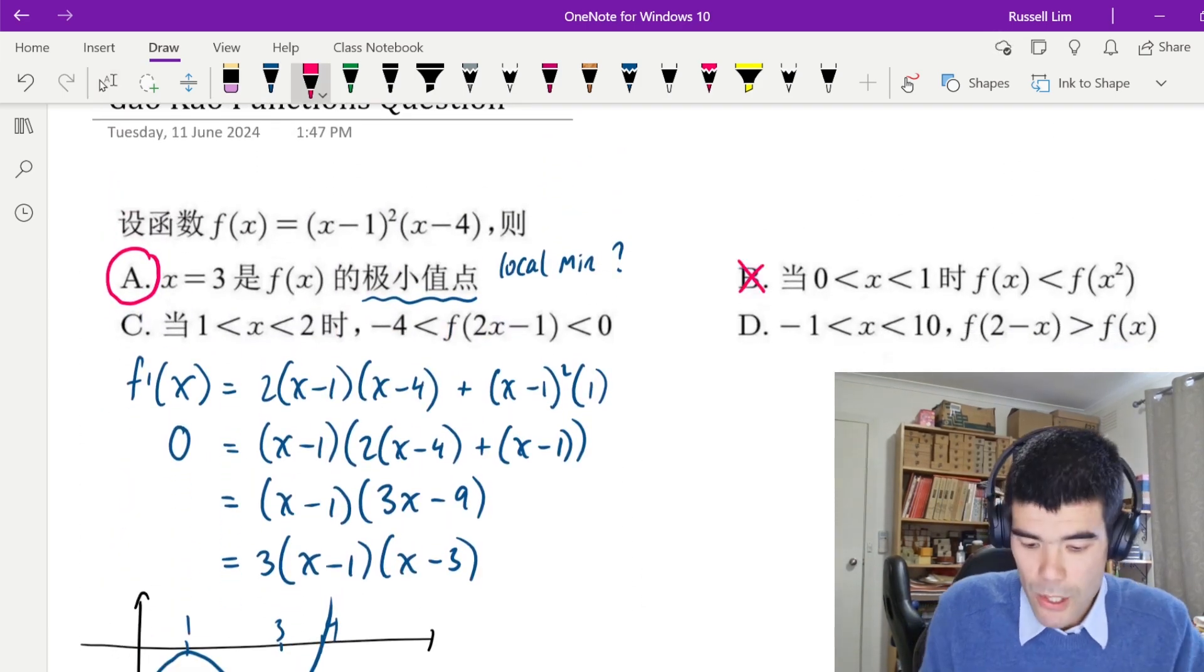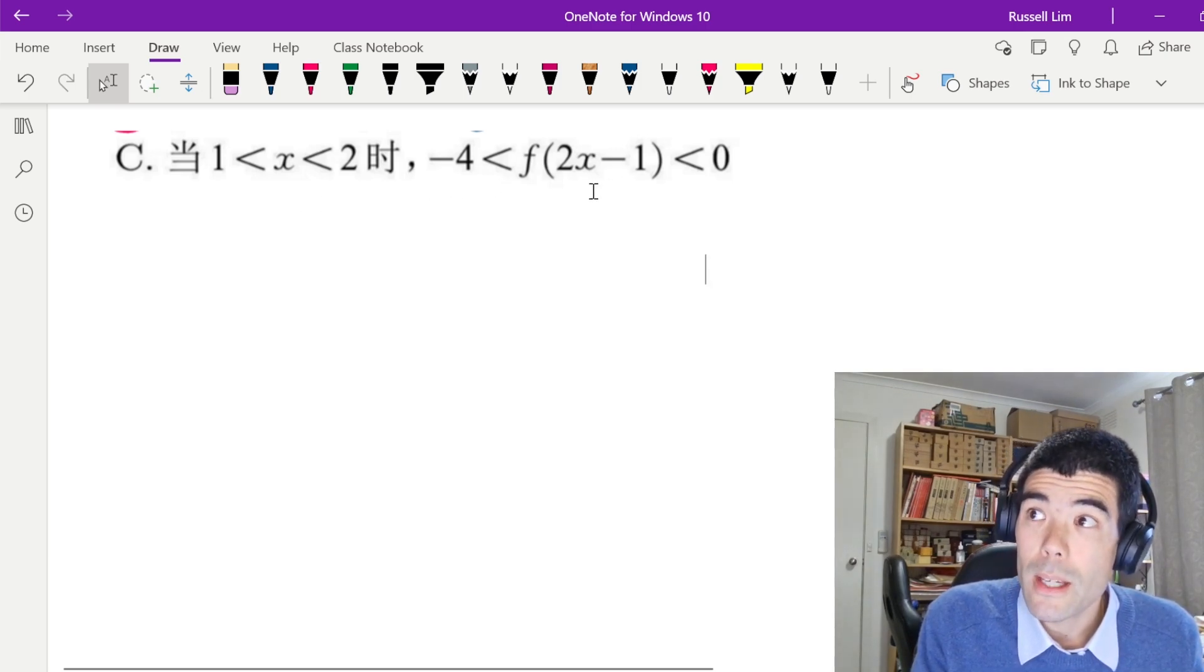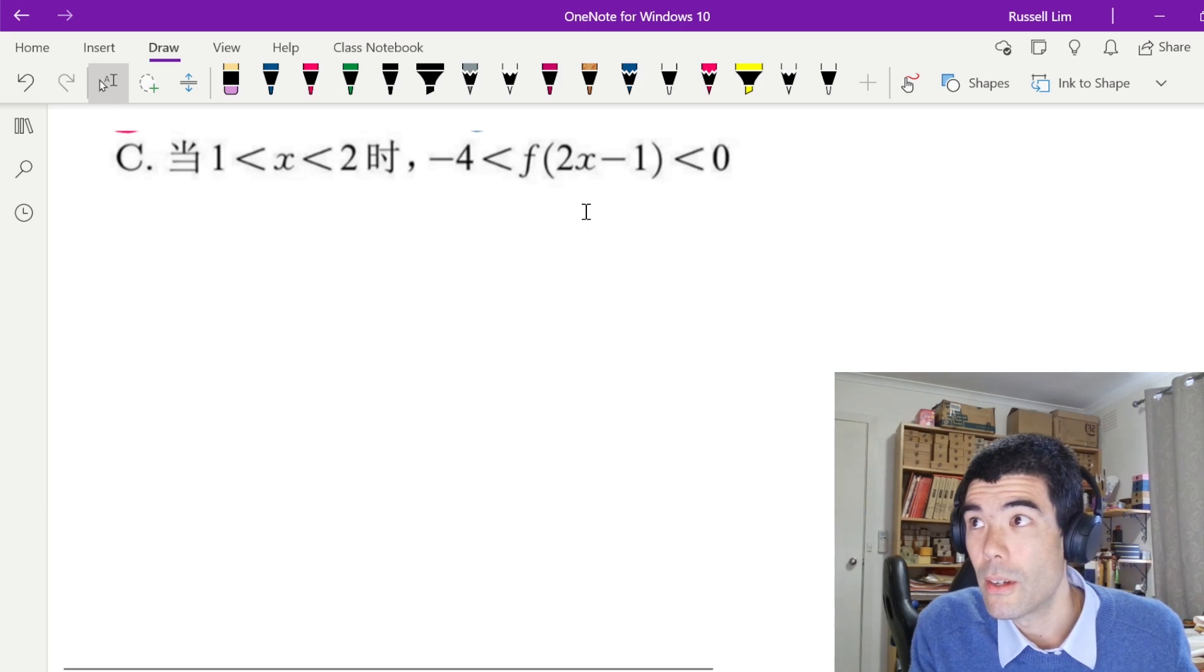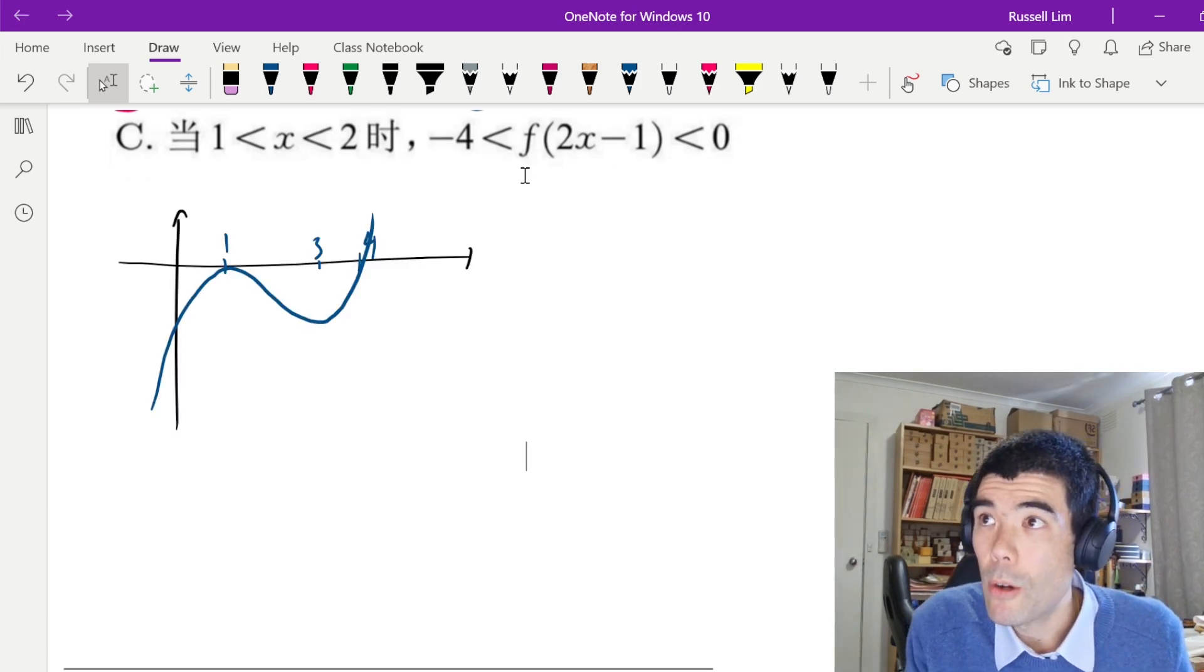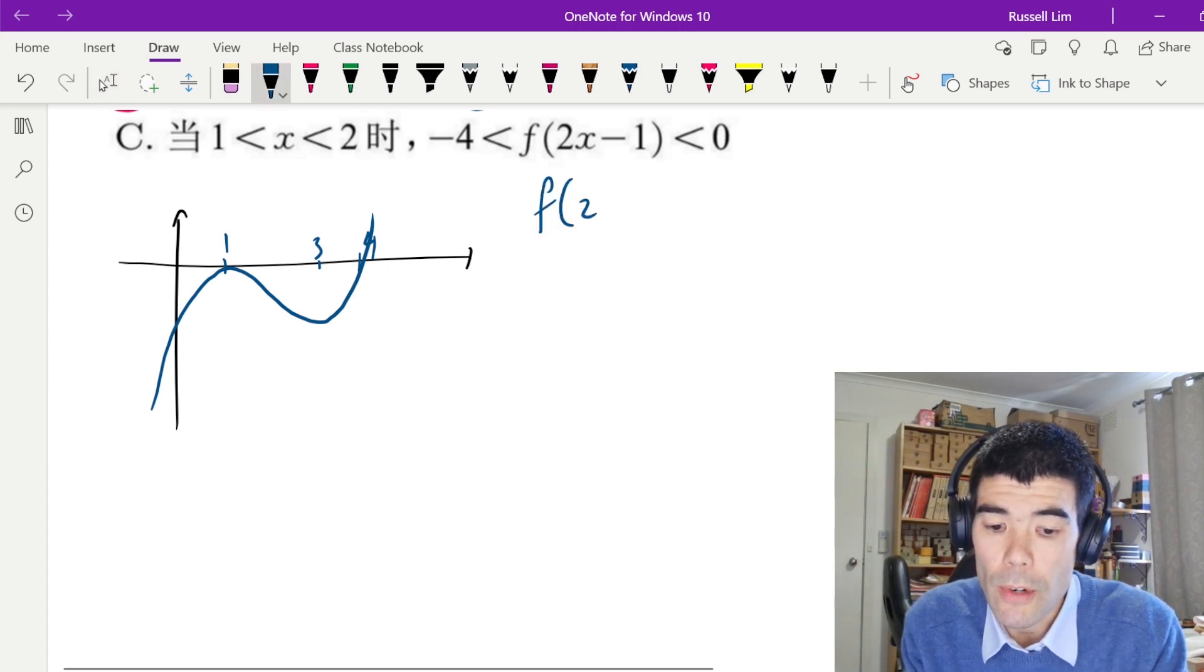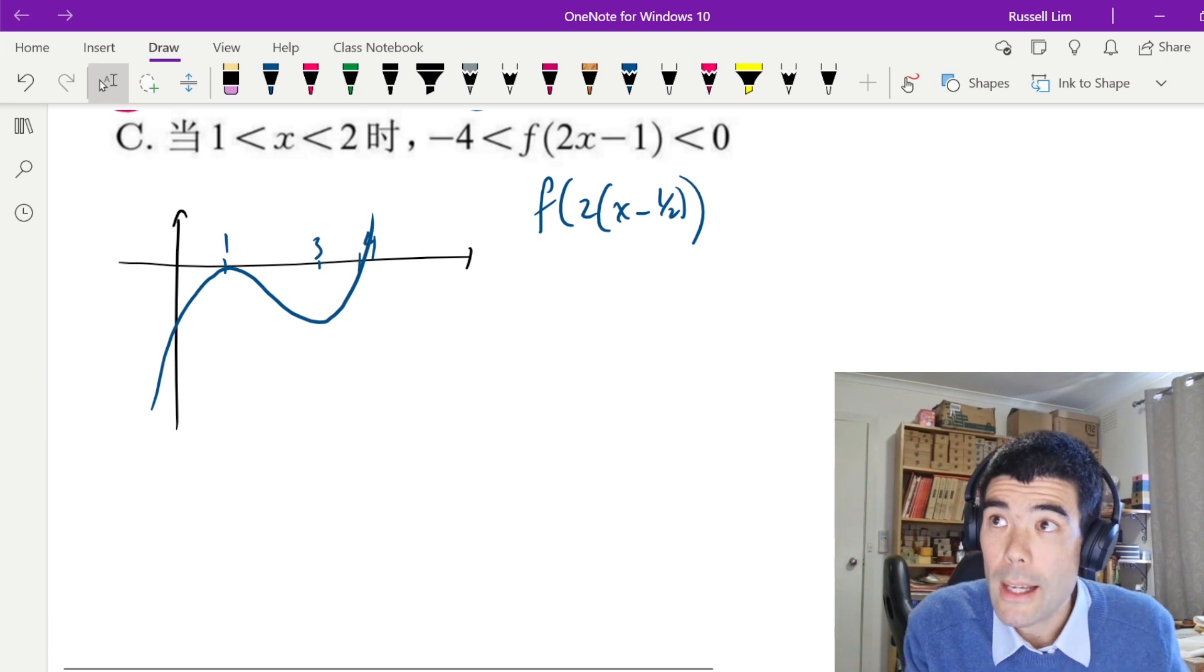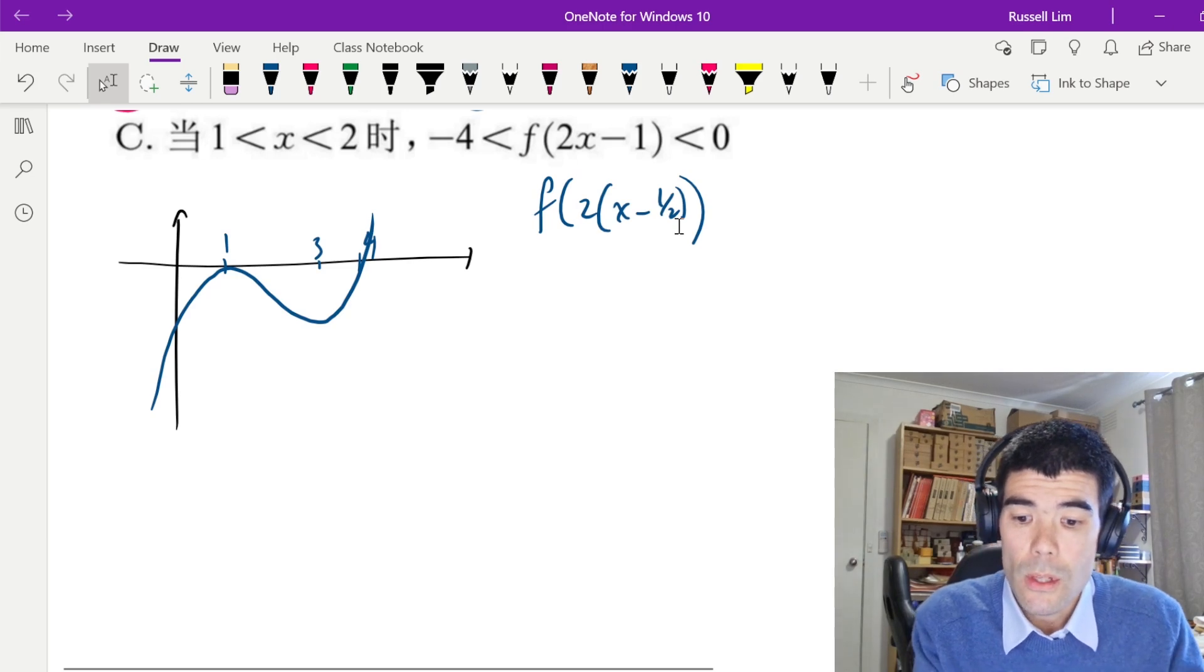Alright, on to option C. When x is between 1 and 2, is it true that f(2x - 1) is between -4 and 0? So let's bring up our graph again. So we want to think about the graph of f(2x - 1). As a transformation, I would probably rewrite this as f of 2(x - 1/2). So we can do the dilation first and then a translation.